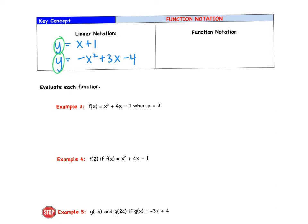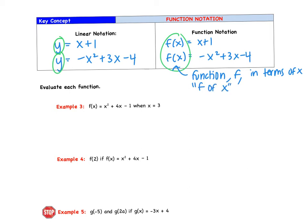Function notation, on the other hand, uses f of x. So you would see f of x equals x plus 1. Or f of x equals negative x squared plus 3x minus 4. So the big difference between the two is the y and the f of x. That f of x refers to a function, f. So it's telling us that our relation is actually a function. And it's a function in terms of x. We normally call this f of x. So x is your input and f is your output. You input for x, f is the output.